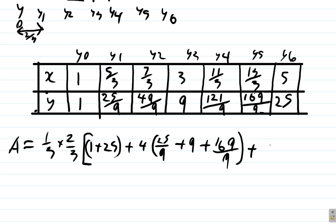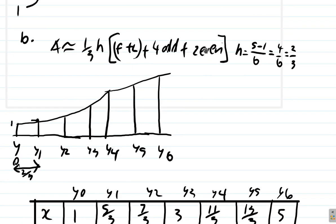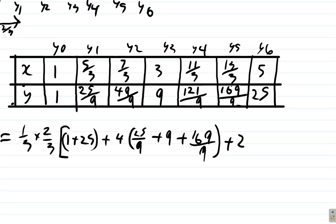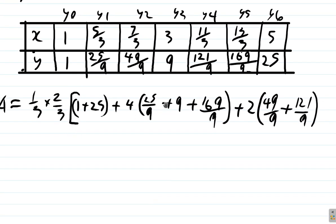Plus 2 times even. 2 times the sum of the even ordinates now. The even ordinates would be y2 and y4. Y6 is an even ordinate, but remember, it's the last ordinate which we had already used here. So y2 is 49 over 9 plus y4 is 121 over 9. Remember, 9 is 9 over 1, and if you multiply the 1 by 9 we get 9. If you multiply the 9 by 9 we get 81.